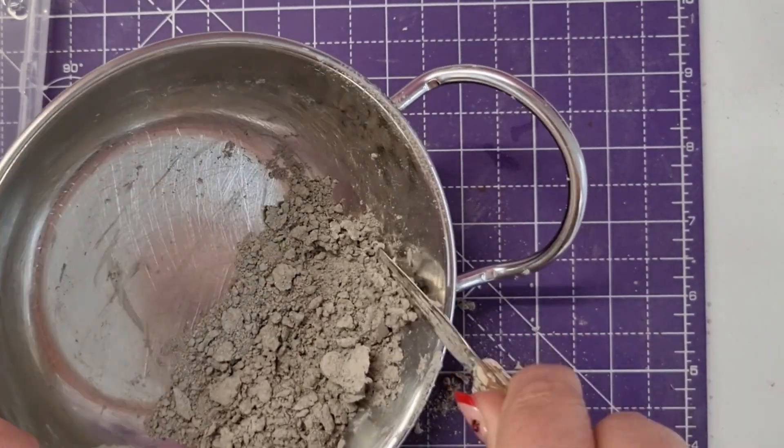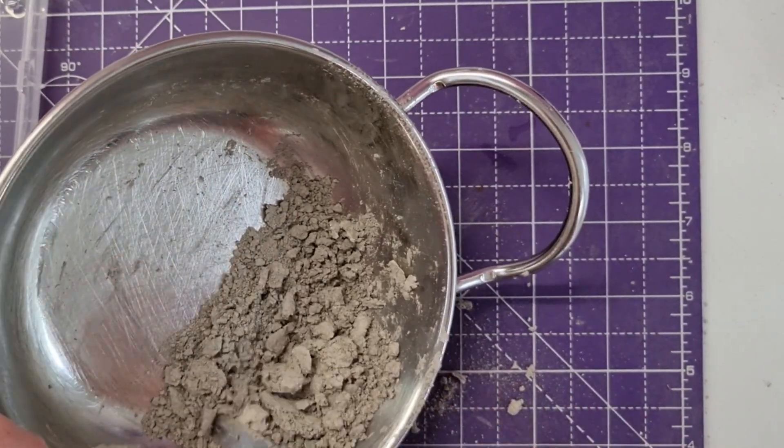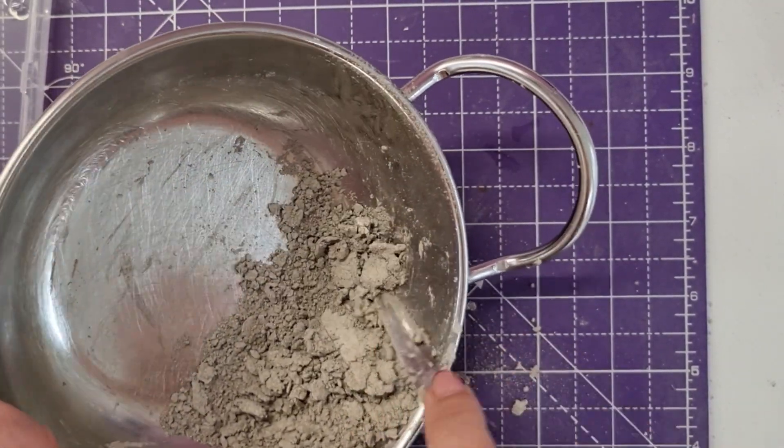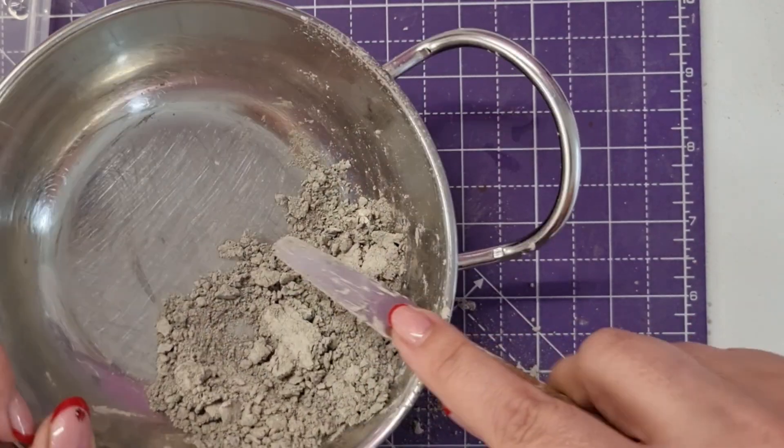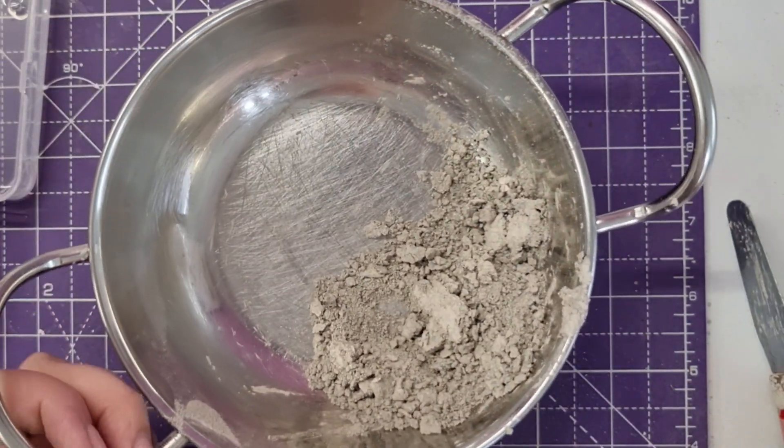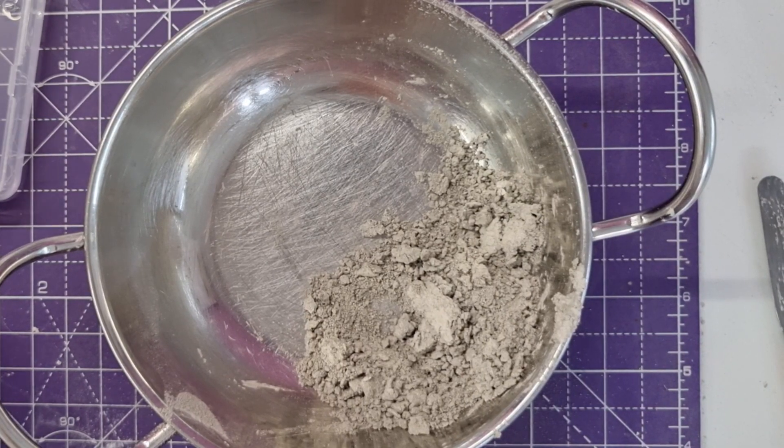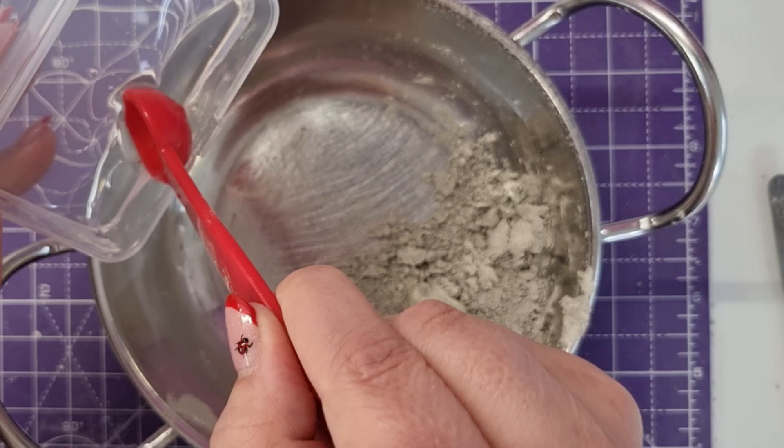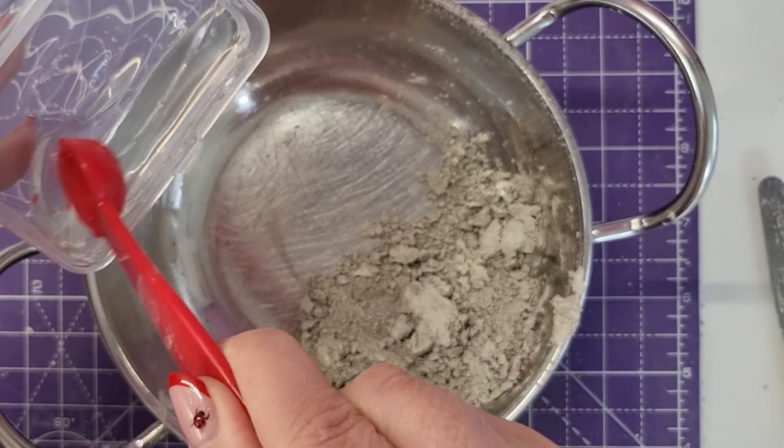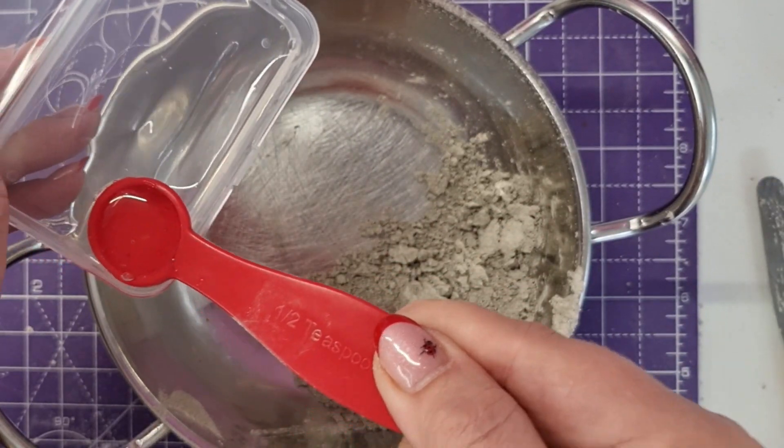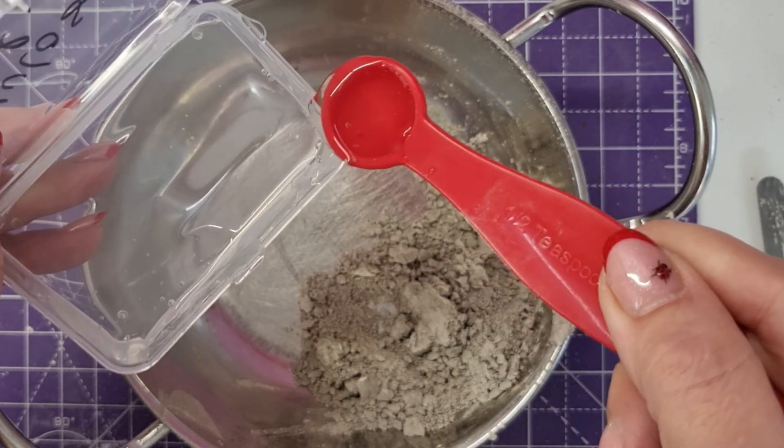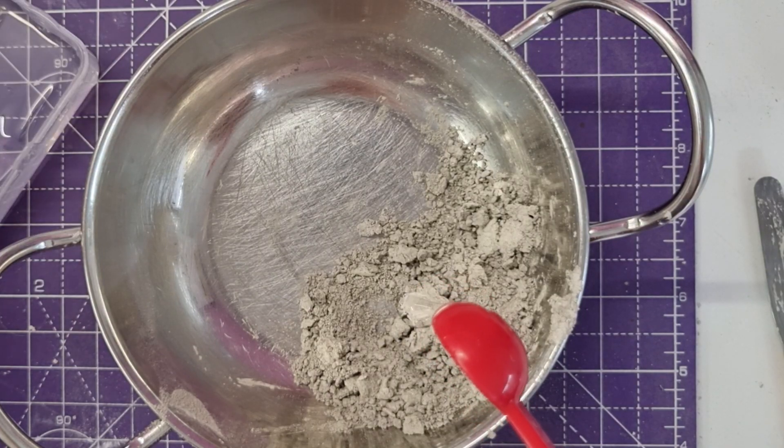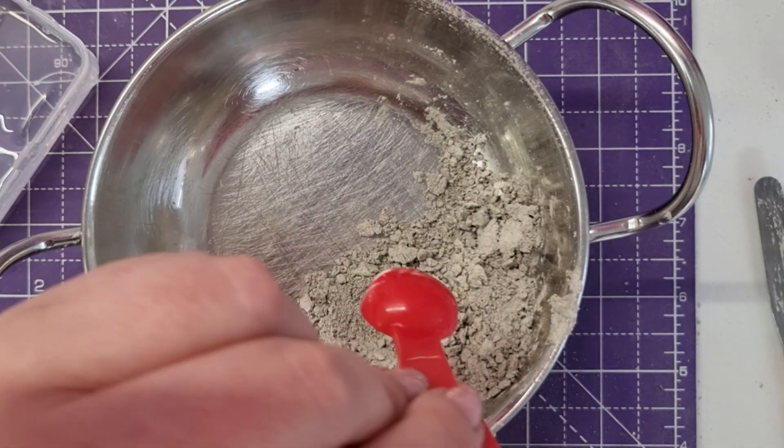This is only one half of a teaspoon and we've got good clumping at the moment. When I add that second half teaspoon you're going to see it really come together. It's great that you can store your leftover gel and put it in a box for use for the next time so you're not wasting anything. I really like that.